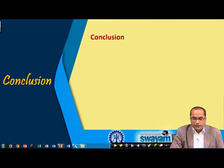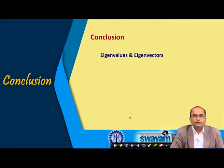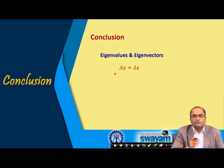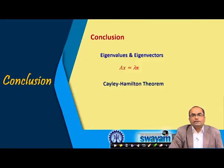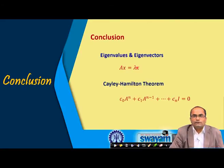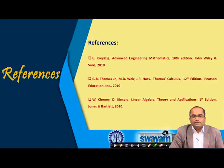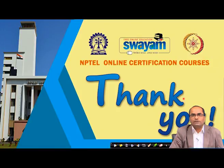In conclusion, we studied the introduction to eigenvalues and eigenvectors. The key equation is Ax = λx, where λ is the eigenvalue and x is the corresponding eigenvector. We also studied the Cayley-Hamilton theorem, which says every square matrix satisfies its own characteristic equation — the right-hand side being the zero matrix. Thank you very much for your attention.